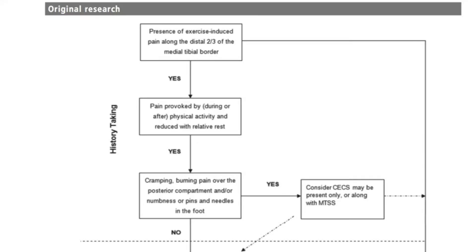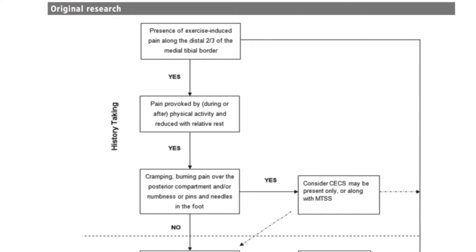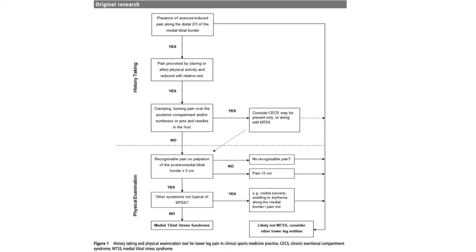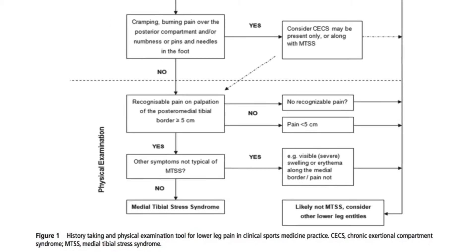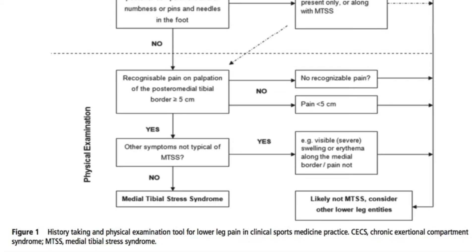The third question was: did you have a cramping or burning pain over the posterior compartment, and/or numbness or pins and needles in the foot? If yes, they were excluded, as this could indicate chronic exertional compartment syndrome alongside MTSS. If they passed all subjective tests, MTSS was suspected and they moved to physical examination, where the posterior medial tibial border was palpated to identify recognizable pain over greater than five centimeters. Less than five centimeters excluded the patient from the MTSS pathway.